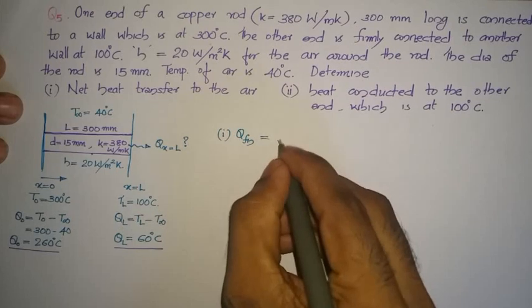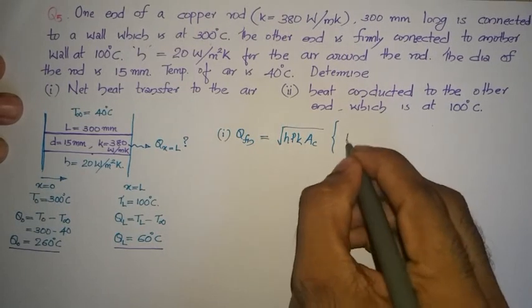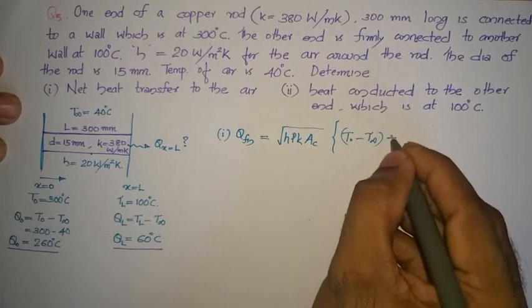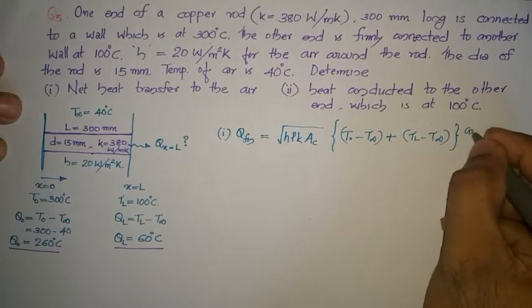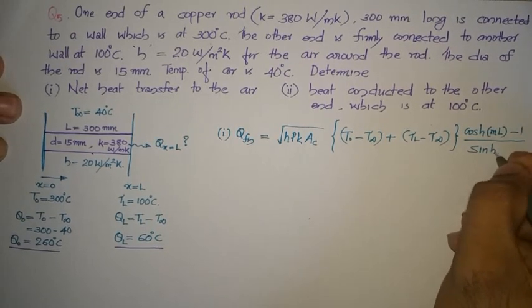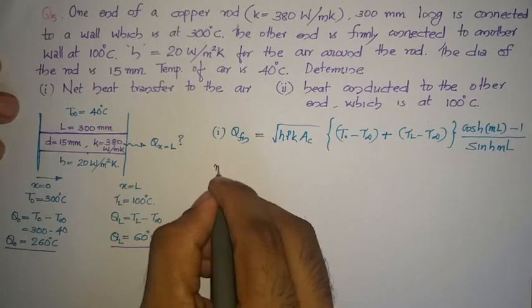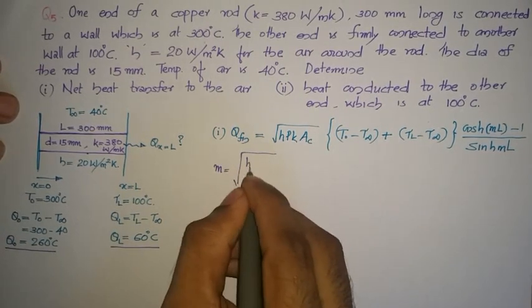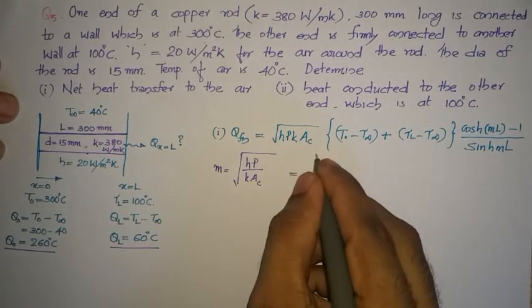We will be applying the equation: Q_fin = √(HPK) × [(T₀ − T∞) + (T_L − T∞) × cosh(mL) − 1] / sinh(mL), where cosh is the hyperbolic cosine function. To evaluate this, we first need to find M, where M is defined as √(H × P / K × A_c).